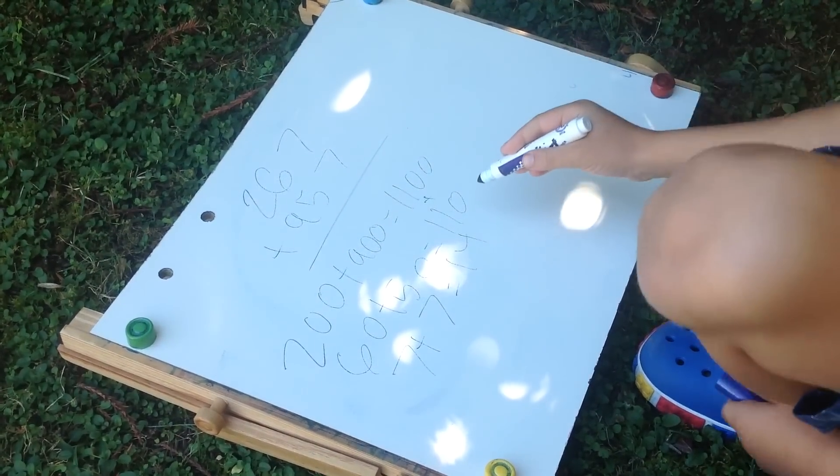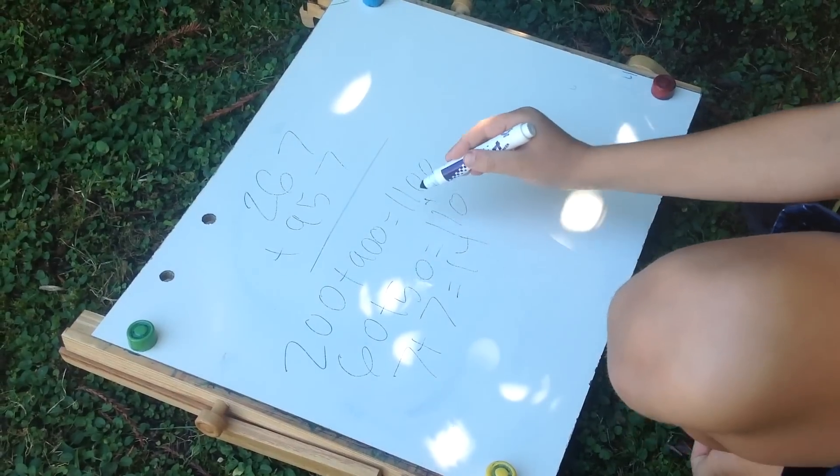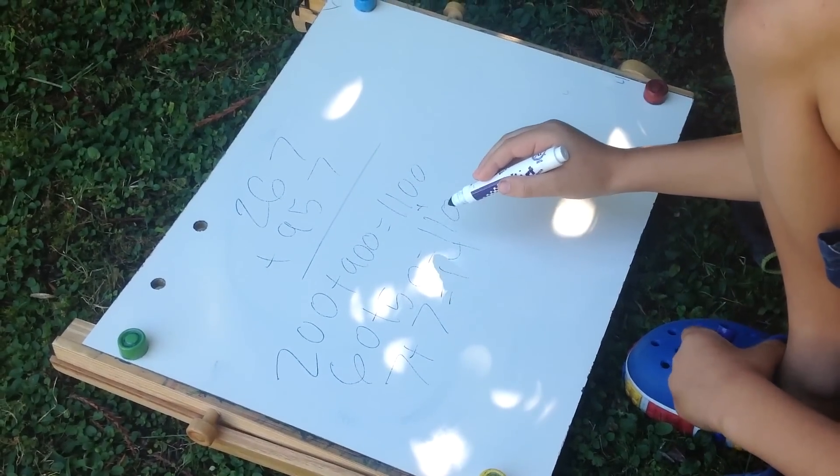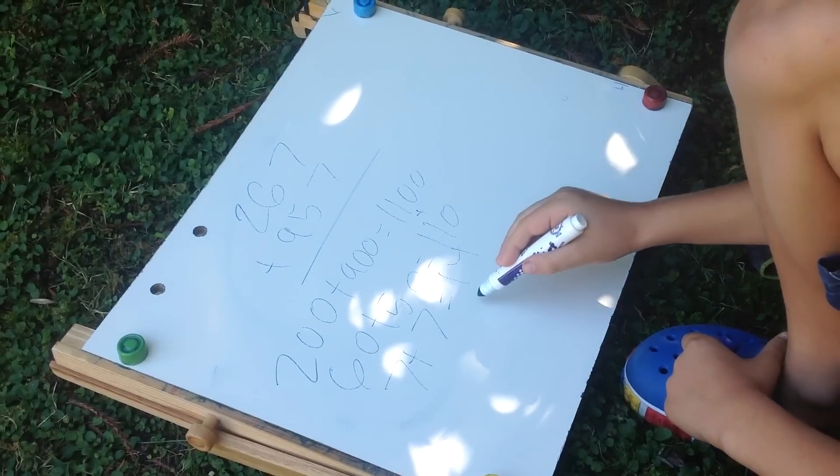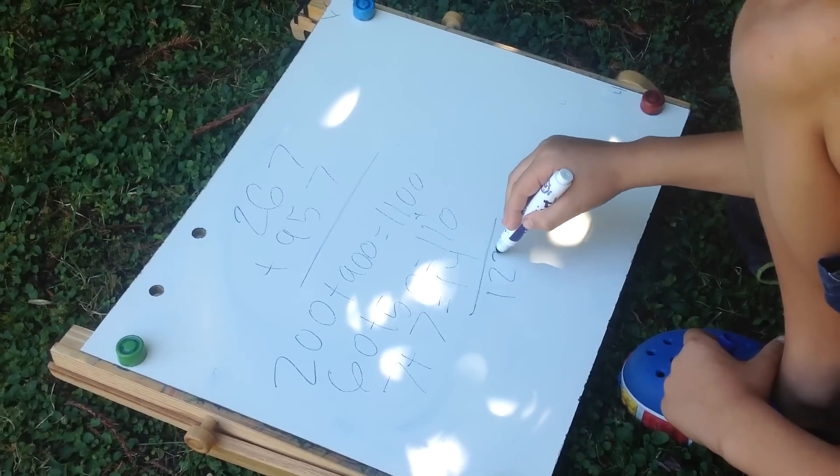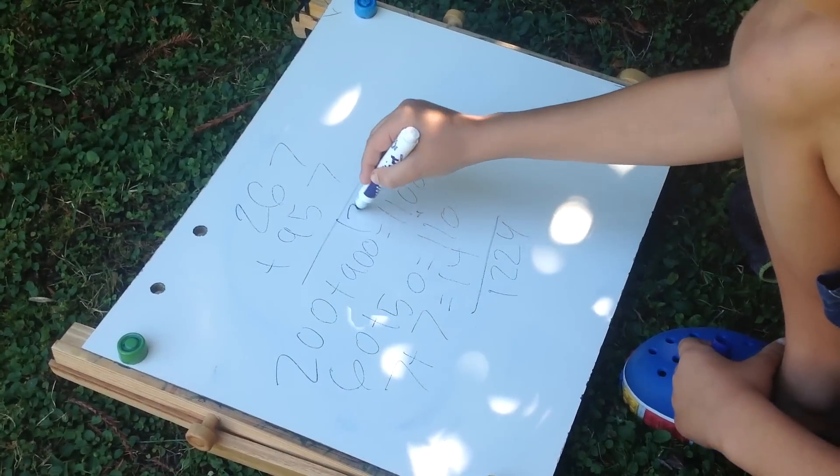1,100 plus 110 is 1,210. 1,210 plus 14 equals 1,224, which is our answer.